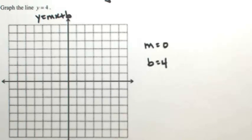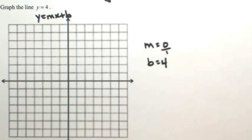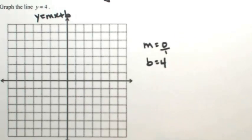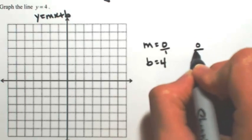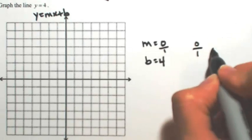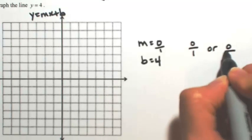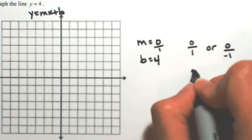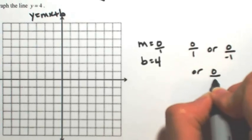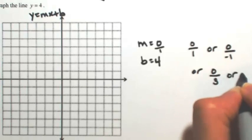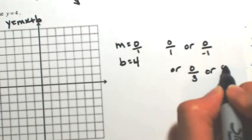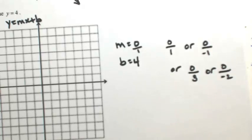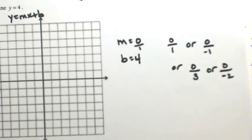Because your slope is zero, technically this is zero over one. You can treat this as zero over one, or you can treat this as zero over any number. Think about it: zero divided by anything is zero. I could do negative one, or zero over three, or zero over negative two. It doesn't matter. Zero divided by anything is zero.